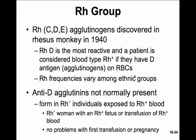Anti-D agglutinins are not normally present in the plasma, unlike with ABO blood grouping. That is, a person's blood won't have agglutinins to D if they are RH negative — until exposed to RH positive blood. From an RH negative individual exposed to RH positive blood, these anti-D agglutinins or antibodies will form.